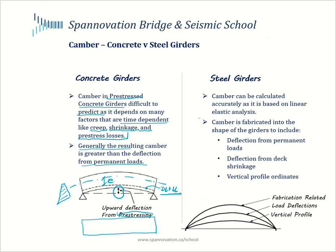We can say with confidence that generally the resulting camber deflections are greater than deflections from permanent loads. This is because the magnitude of the pre-stressing is determined based not only on dead loads but also live loads, so the upward deflections from camber are anticipated to be greater than the downward deflections from permanent loads, resulting in a net upward bow of the girder. In contrast, with steel girders we have excellent control over both the calculation of desired camber values and the ability to cost-effectively fabricate the desired camber into the girder shape.